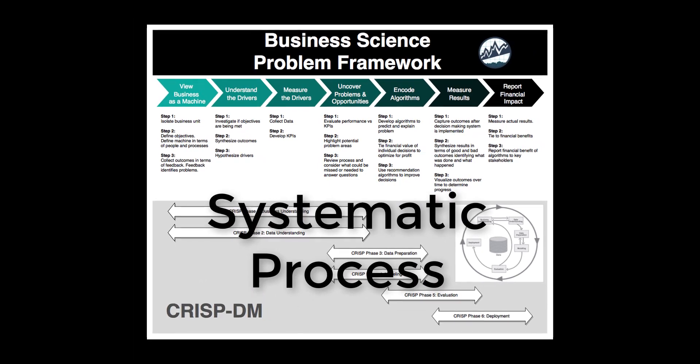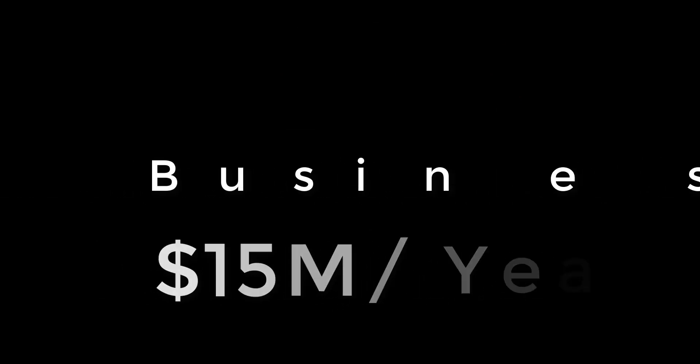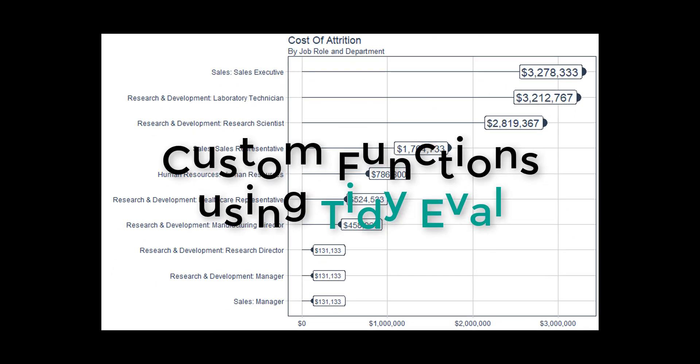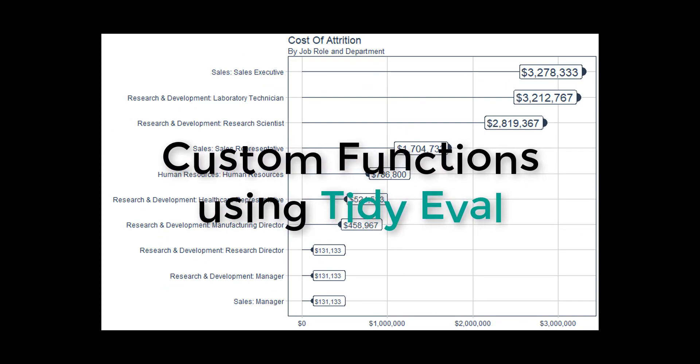We take you through our systematic process. First, you will understand the business problem assigning a financial figure to employee turnover. We develop custom functions to enable visualizing attrition cost by department and job role.